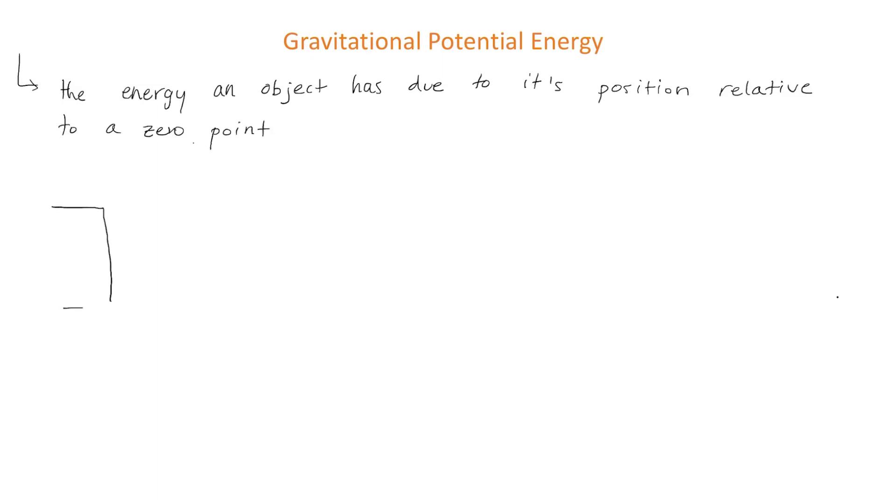What do I mean by this? Well imagine we have this person who's standing on the top of a cliff and we set the zero point to be the ground. Well that means that the person is some height above zero and that height gives the person potential energy.